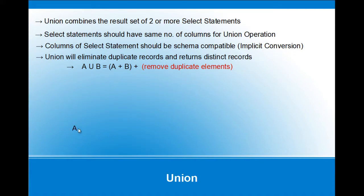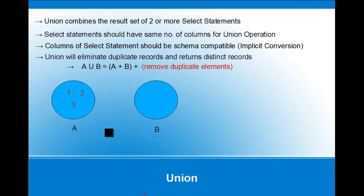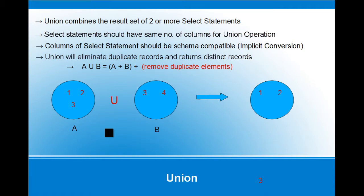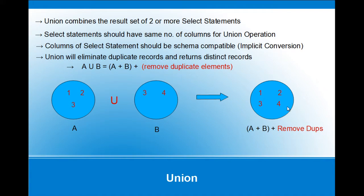Here we have table A with IDs 1, 2, and 3, and table B with IDs 3 and 4. When we perform the UNION operation between these two tables, we get result set 1, 2, 3, 4. The value 3 appeared in both table A and table B, but UNION removed the duplicate and returned only the distinct records. That's how UNION works.